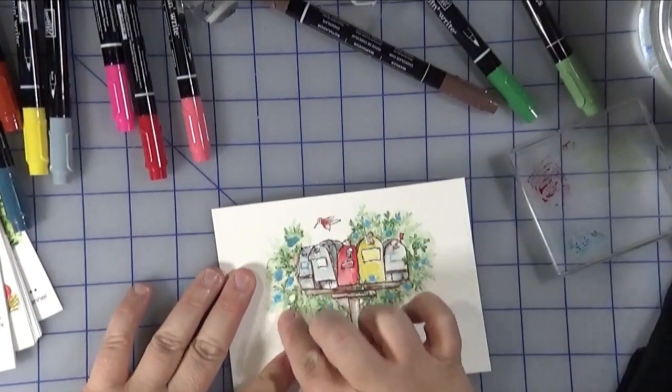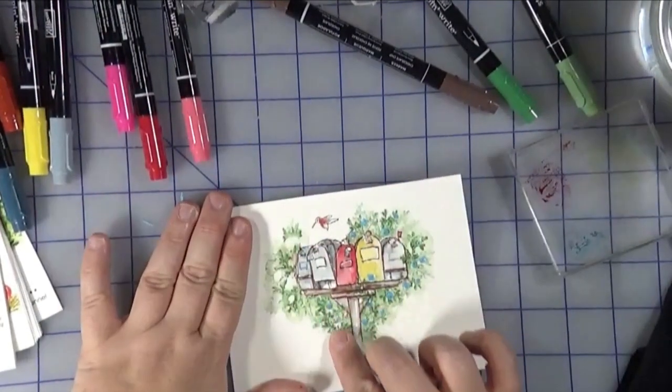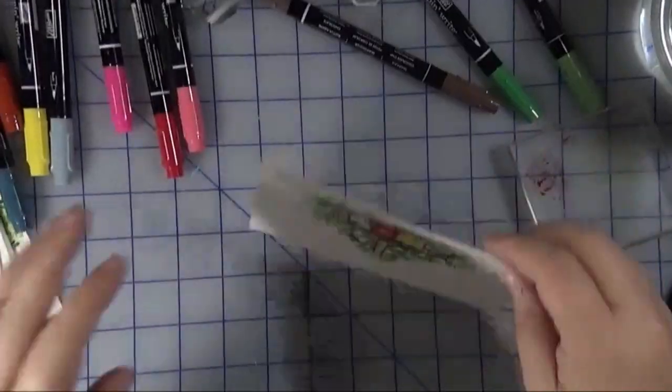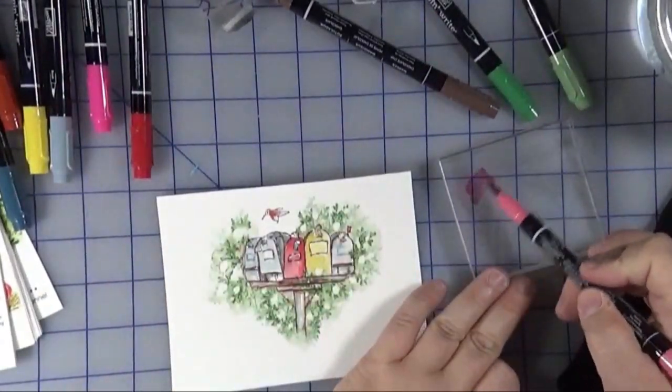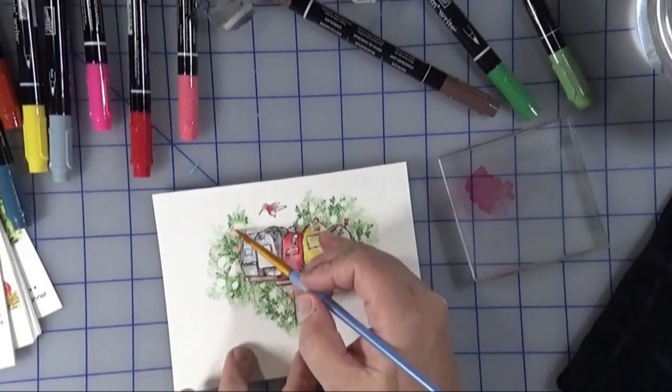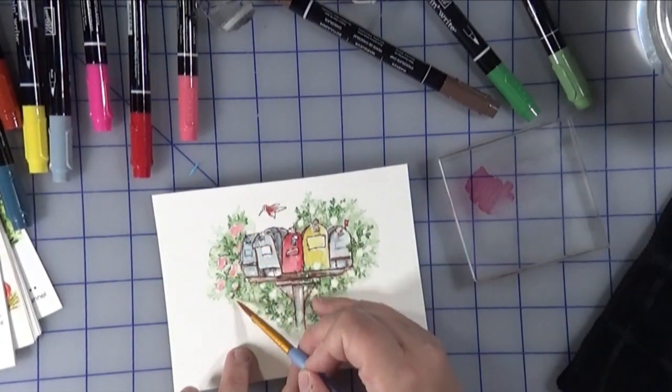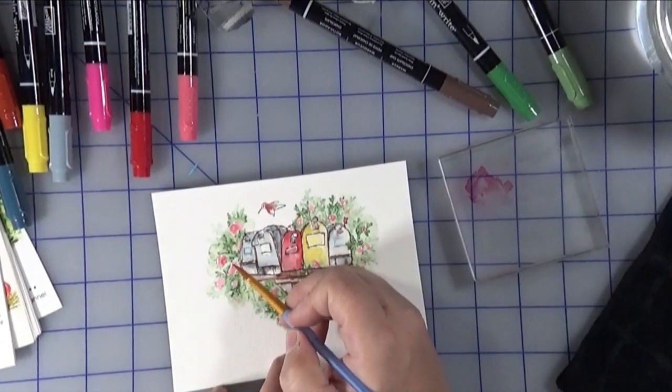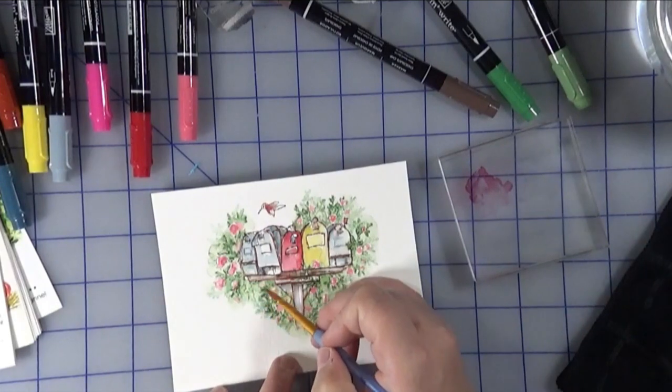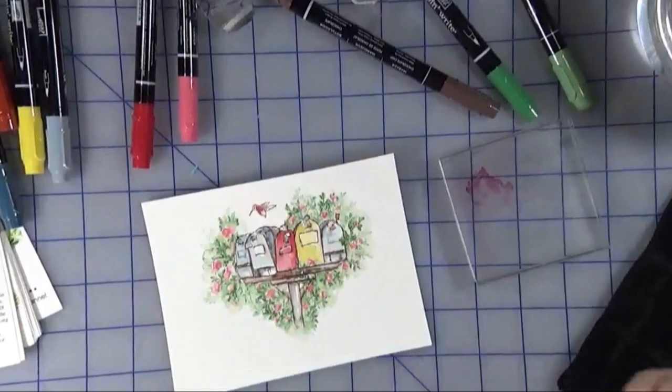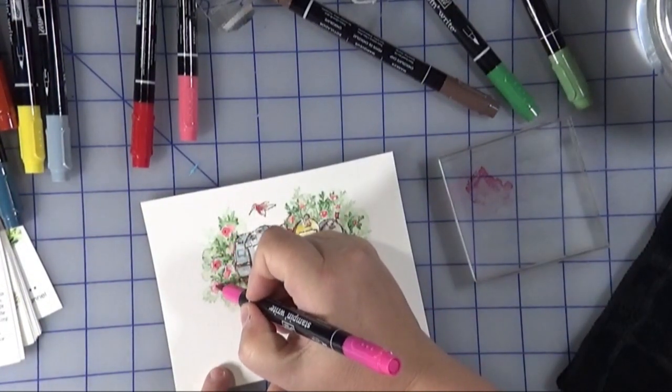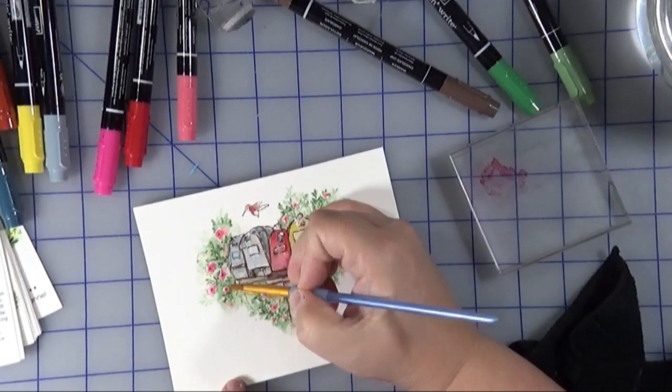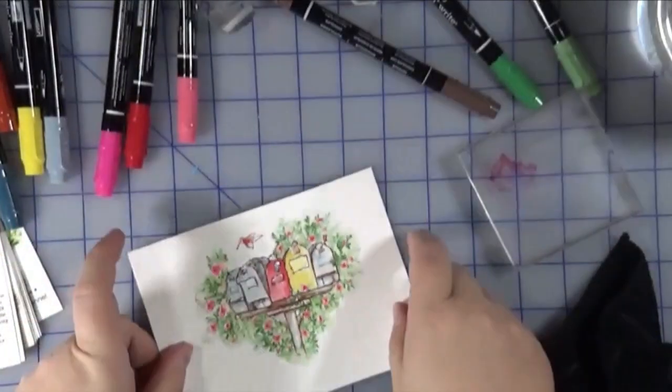Now here comes the fun part, we're actually going to remove the masking fluid. All you need with this particular brand is just your fingers and it rubbed off very easily. Now you can see those white spots that were left over. I'm taking the lighter pink and filling them in with a dotty dabbing motion. I don't want to fill in the white completely, I want to leave a little bit of white. I'm also going back over top of them again, just some pieces of it so it kind of looks like petals. Then I'm taking the darker pink and putting a small dot in each of the flowers to represent the centers, then dabbing on it with a very damp paintbrush.